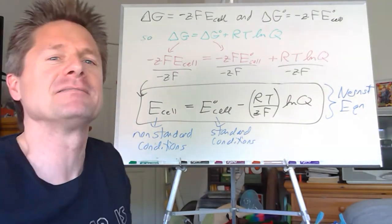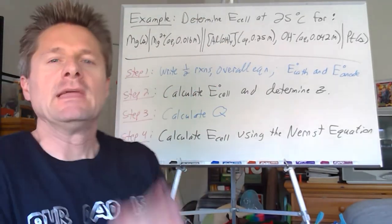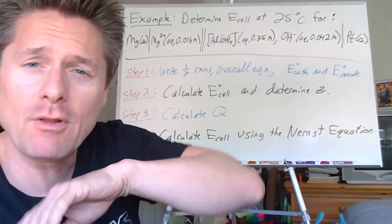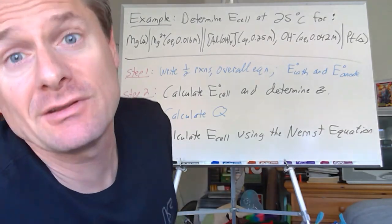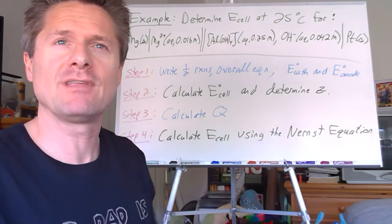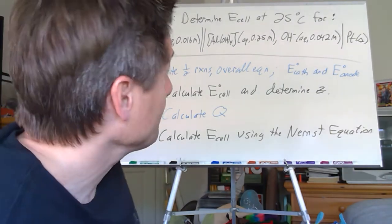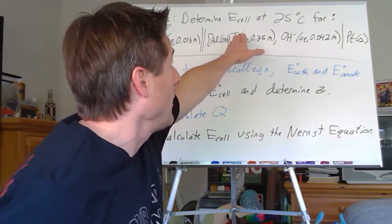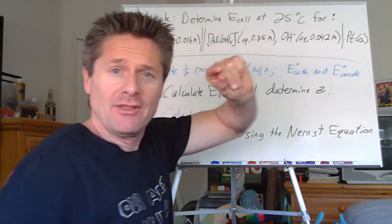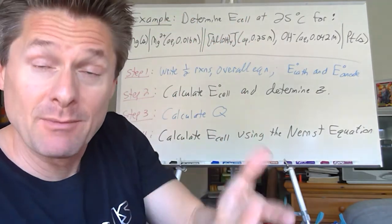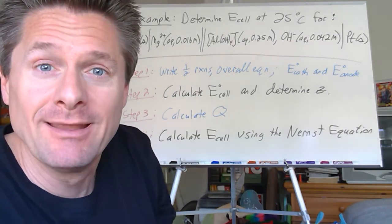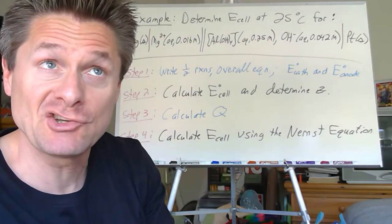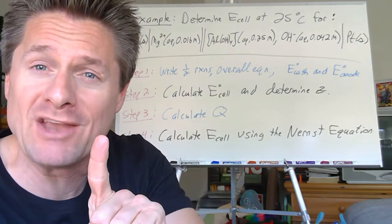Here's a type of problem you'll see on your exams. Sometimes I give you the overall equation, sometimes the cell line notation, sometimes a picture of the beakers. When you see E-cell without the little 'not' symbol, that's an implicit implication you're calculating something at non-standard conditions — only one equation: the Nernst equation.